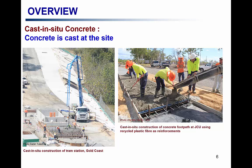When it comes to construction technique, there are two types of concrete structures. One is cast in situ concrete, and the other is precast concrete. Cast in situ concrete, as the name suggests, is where concrete is poured at the site itself. In the first picture, concrete is being poured at the site using a pump for the construction of a tram station on the Gold Coast, Australia. The second shows construction of a footpath at James Cook University.